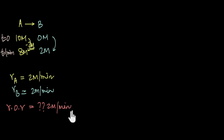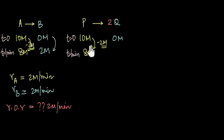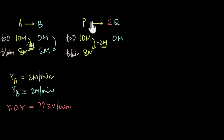Let us now take a totally different reaction: P giving 2Q. Even in this reaction, let us assume that initially the concentration of P was 10 molar and the concentration of Q was 0 molar. To keep things simple, let us say that after one minute the concentration of P also drops down from 10 molar to 8 molar. In this reaction, 1 molar of P gives 2 molar of Q, so 2 molar of P on complete reaction will give 4 molar of Q.